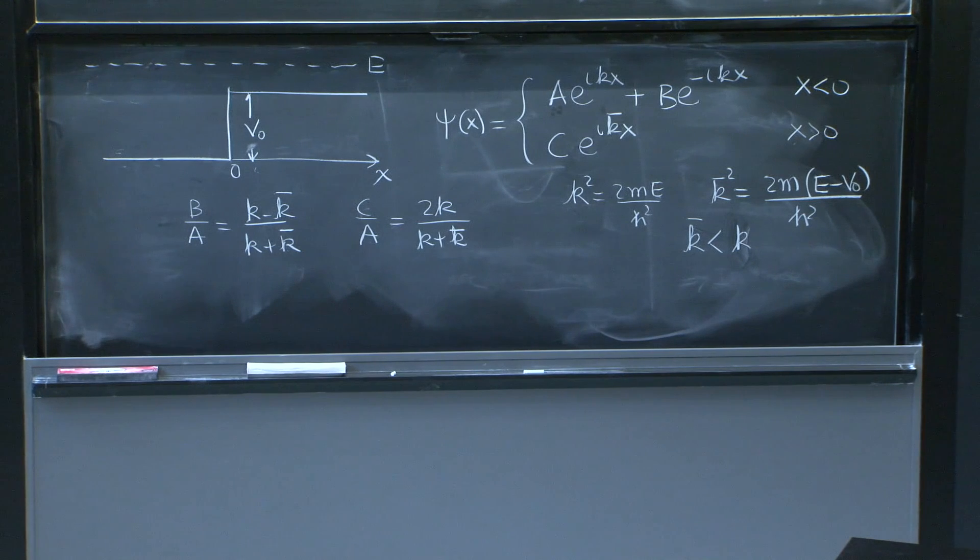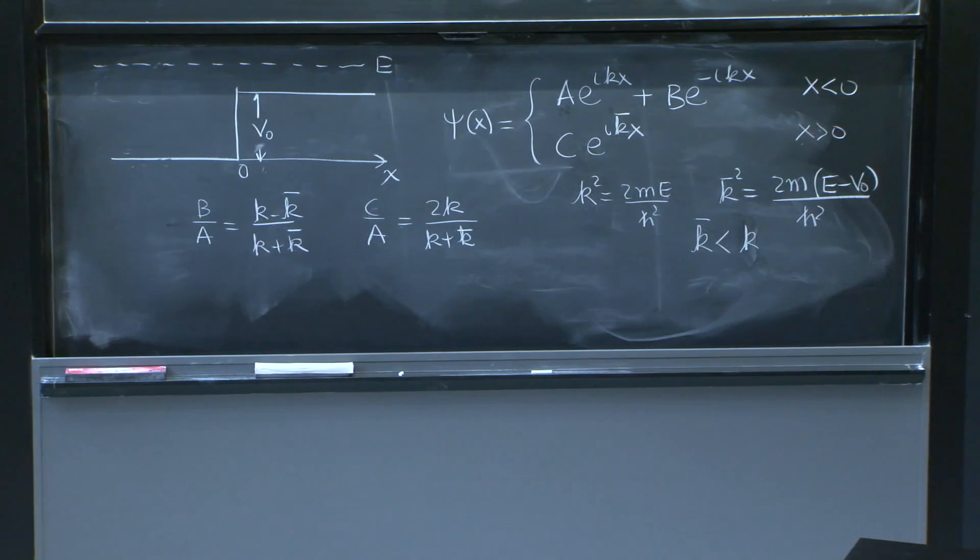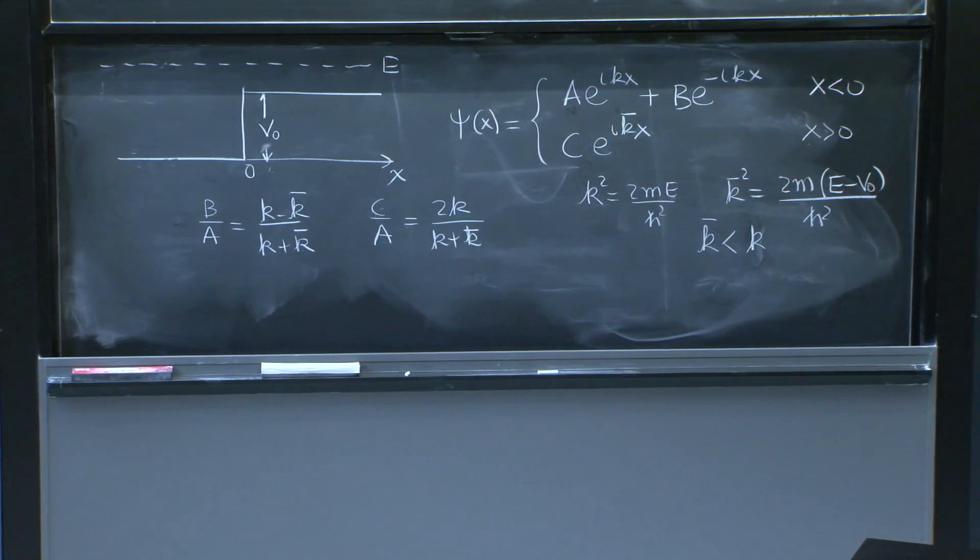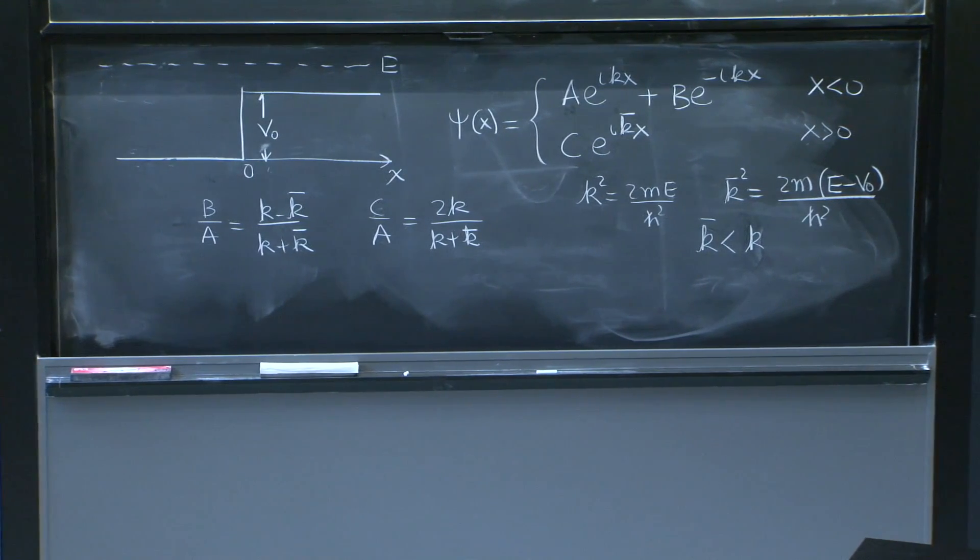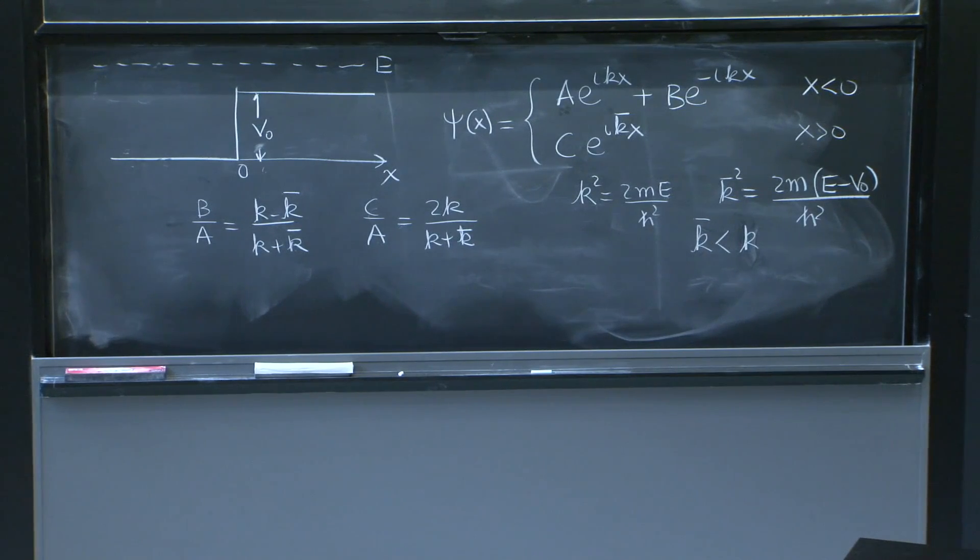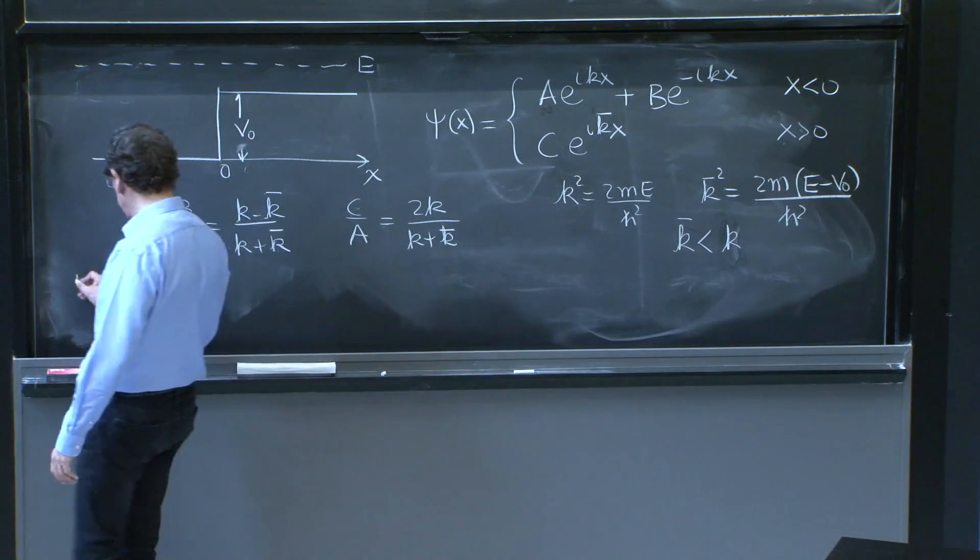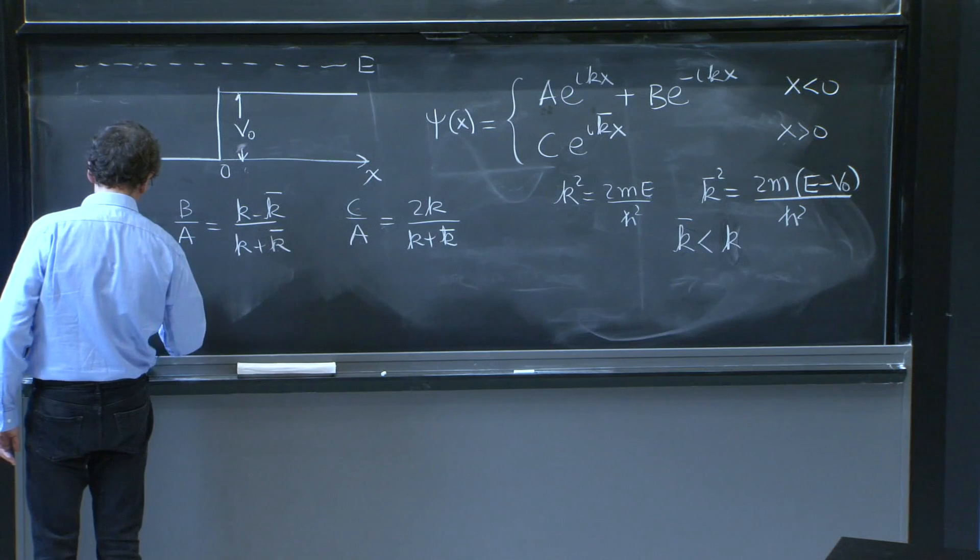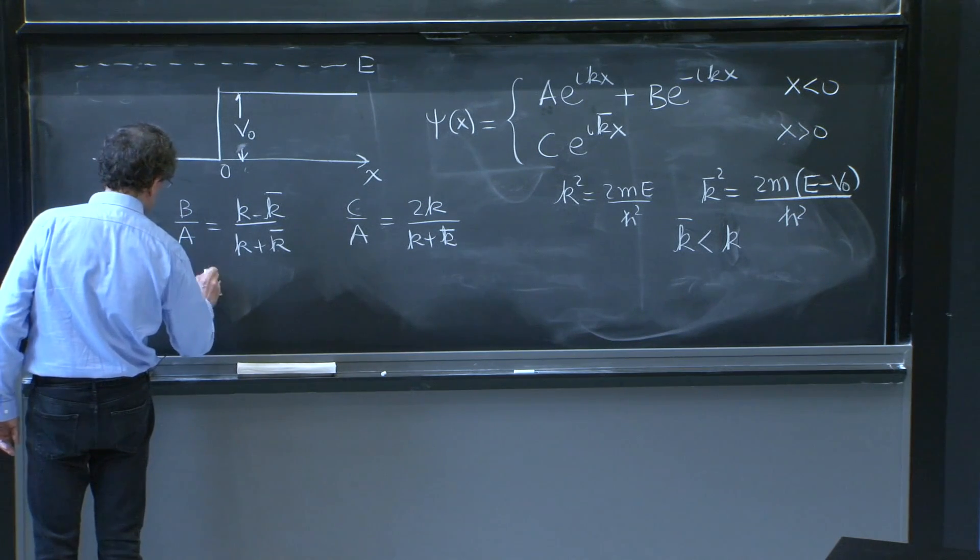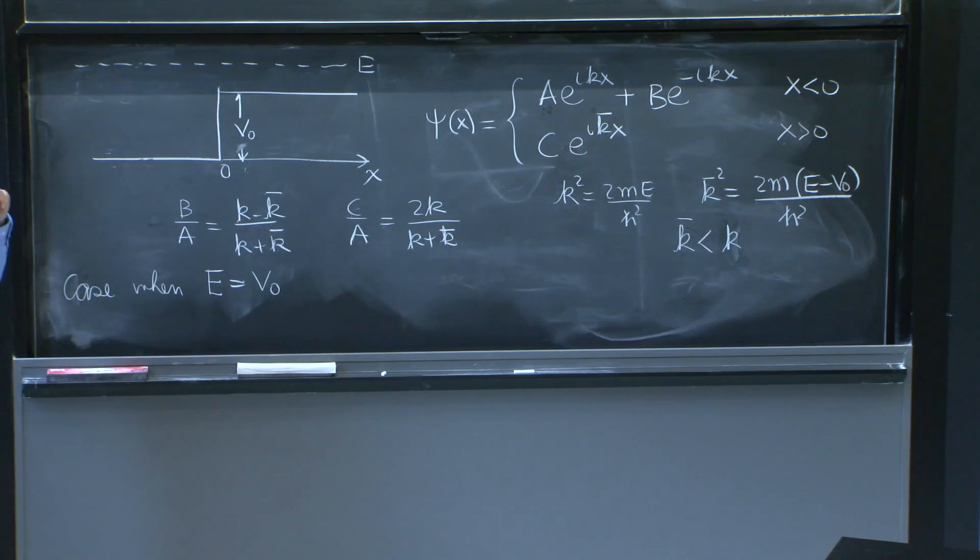So this is what we did. We essentially solved the problem. And this qualifies as a solution. But we still haven't learned anything very interesting from it. We have to understand more what's going on. And one thing we can do is think of a particular limit. The limit or the case when E is equal to V₀, exactly equal to V₀, what happens?